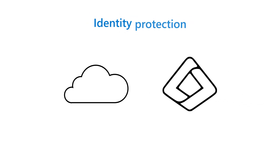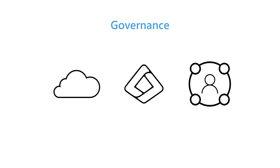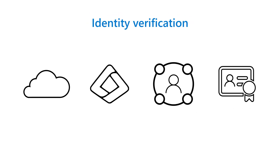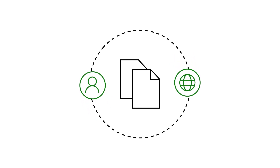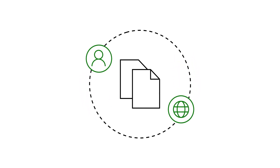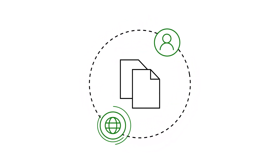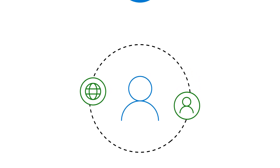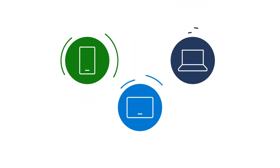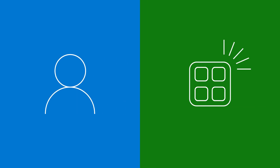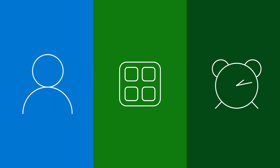The Microsoft Entra Suite simplifies your zero-trust architecture with an integrated conditional access policy engine. It combines security service edge, identity protection, governance, and identity verification. With the Microsoft Entra Suite, you can implement consistent identity and network access policies for every employee, no matter what device they're using or where they're working from.